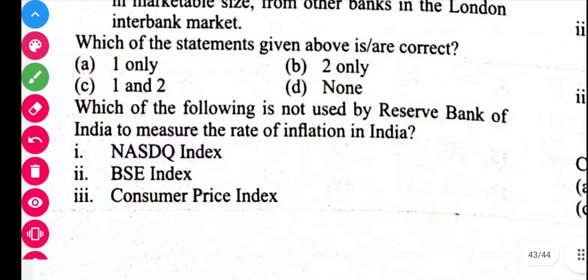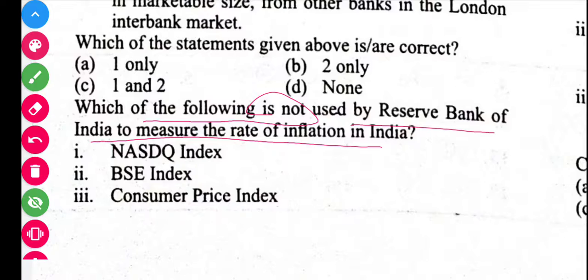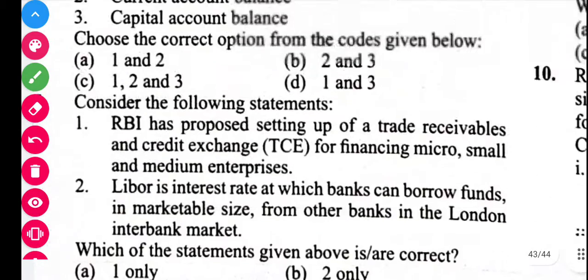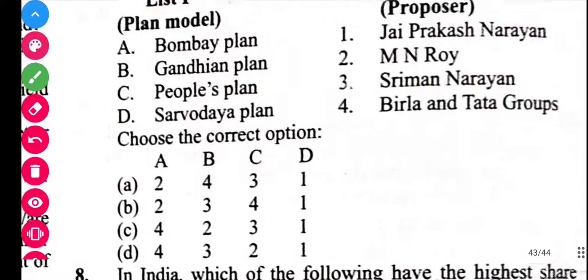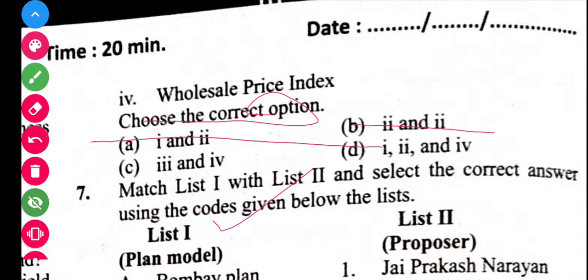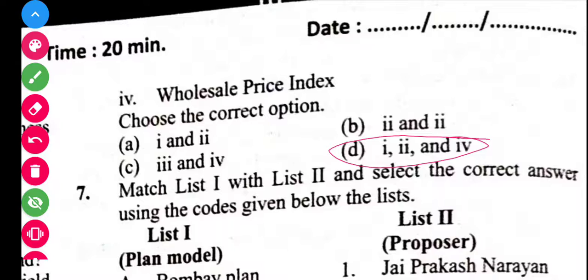Next question: which of the following is not used by the Reserve Bank of India to measure the rate of inflation? The RBI uses the Consumer Price Index to measure inflation. Answers 1, 2, and 4 are not used by RBI. Consumer Price Index is used. So the answer is D.